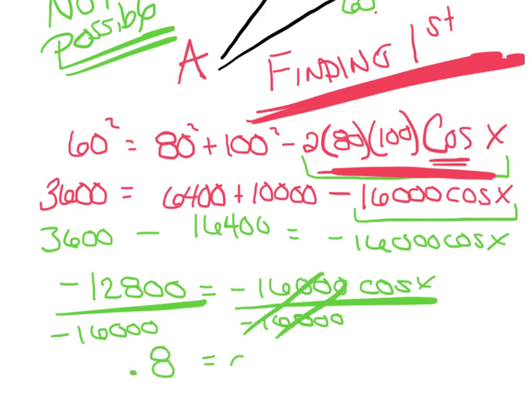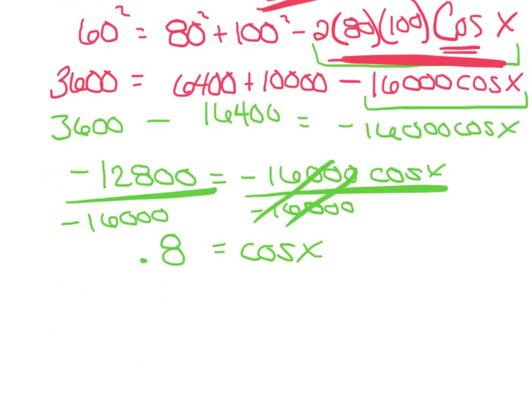Now, if for some silly reason they wanted cosine x, I'd be done. But of course, they usually don't. They want me to go get x. So remember, you are taking the inverse of both sides. And so if I hit second cosine of that .8, I should be getting 36.869 blah, blah, blah, blah, blah equals x.